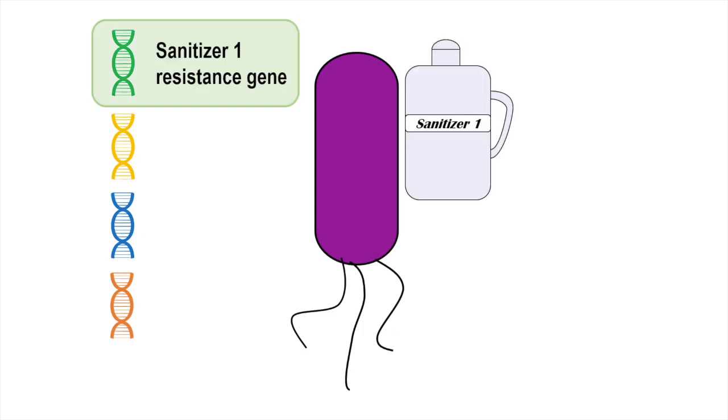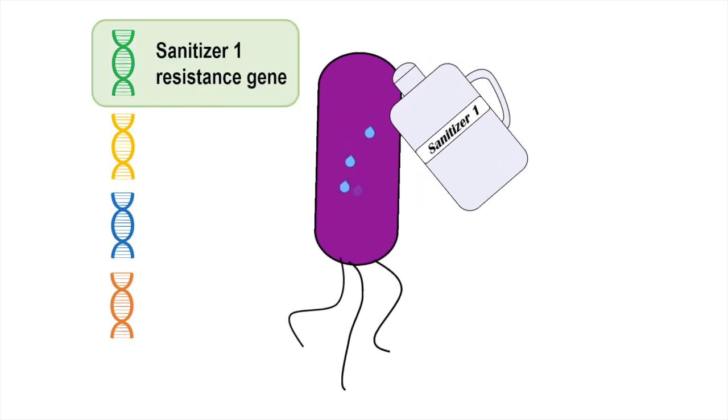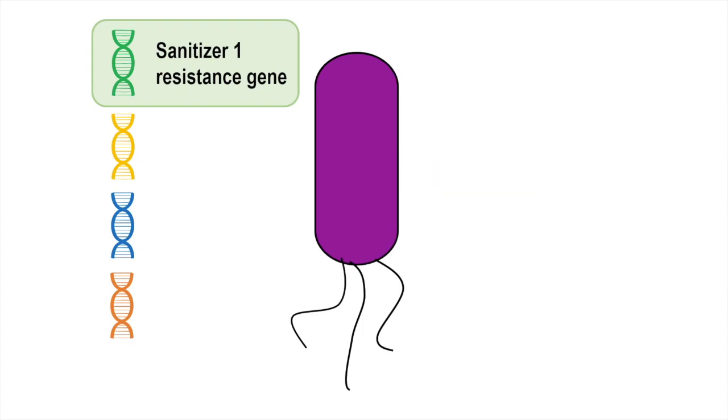In addition to that, whole genome sequencing provides information about genes encoded in microbial genomes. For example, we may find a gene that encodes a protein which provides resistance to a certain sanitizer. This can help us select a better, more effective sanitizer that the strain will not be able to resist.